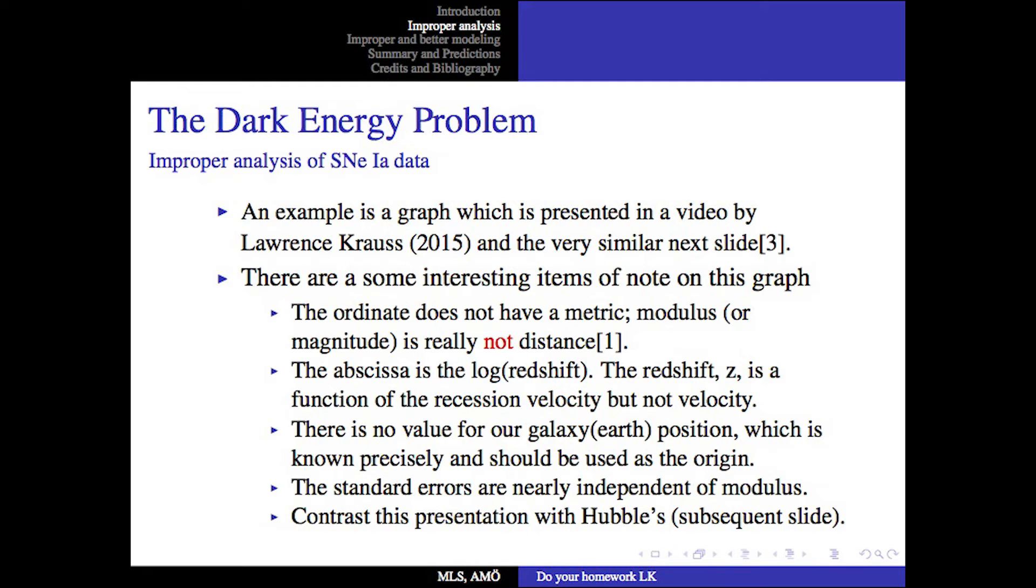The abscissa is the log of the redshift. The redshift is a function of the recession velocity, but it's not the velocity. There is no value for our galaxy, the position of our Earth, which is known precisely without any error and should always be used as the origin of this type of plot. You'll note the standard errors are nearly independent of the modulus. This contrasts with the presentation by Hubble in 1929, which is a subsequent slide.